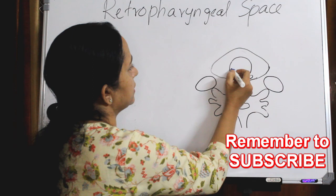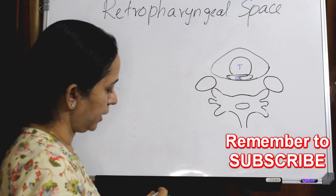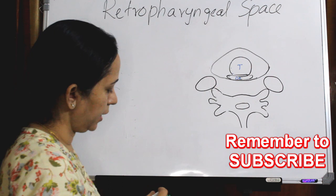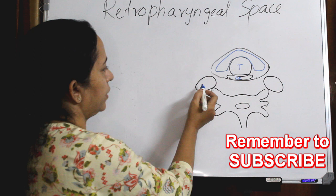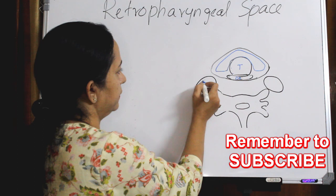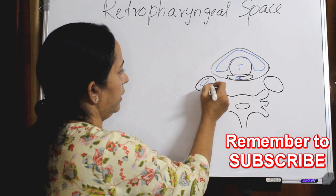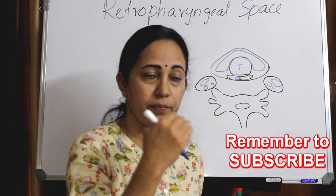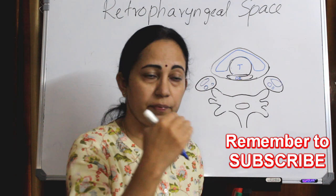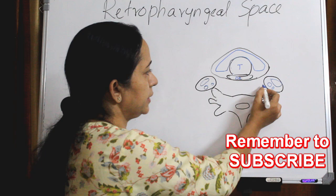This is an axial section at the level of the esophagus. Here we have the esophagus, and this is the trachea. Over that lies the thyroid gland. On the lateral sides we have the internal jugular vein, the carotid artery, and the vagus nerve — that is the carotid sheath. And then the cervical vertebra.